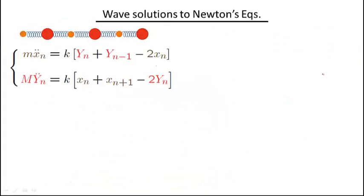Here I show the same Newton's law derived previously, now slightly rewritten by grouping together the 2x sub n and 2y sub n terms. This is a complicated-looking infinite system of coupled differential equations, and naively one might say it's hopeless. But it turns out that using a combination of a powerful mathematical method — the Fourier transform, which we've already used — and a reasonable physical guess, we can solve the problem in a few relatively straightforward steps.